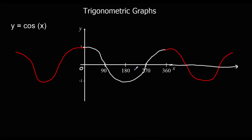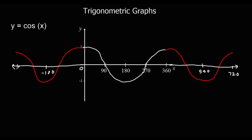If we extend our axes, we can say that at 540 we've got the minimum point, and at 720 we've got the maximum point. We can also draw a line of symmetry on the cosine graph — this time we're going to draw a line of symmetry at 180 degrees.